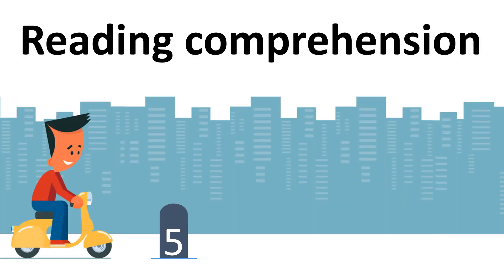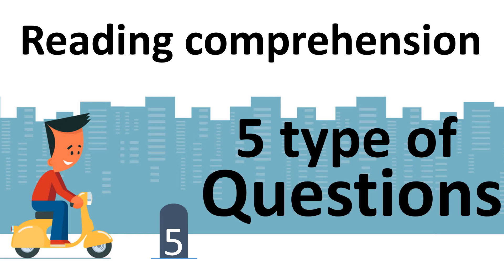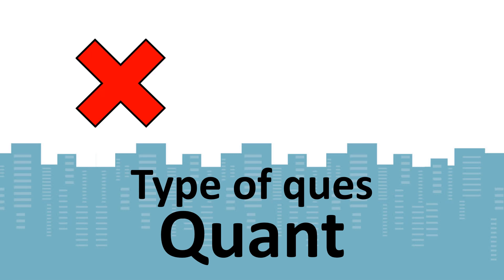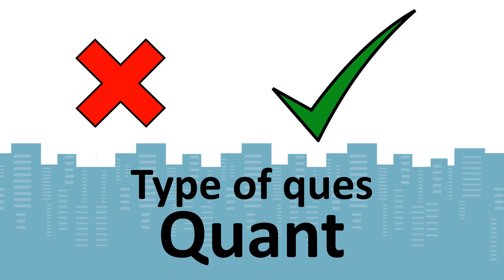In this video we go through the five types of questions which come in reading comprehension. In quant it's easy to find out what kinds of questions are there, which helps identify what you know and what you don't know in the quant section. But in the verbal section we don't care about all these things, so in this video we'll talk about how to do that so it can help improve verbal ability.